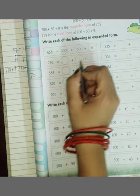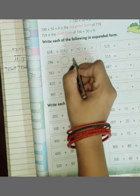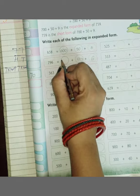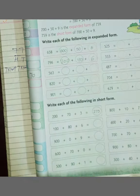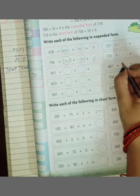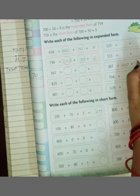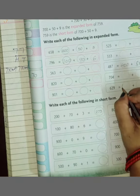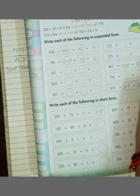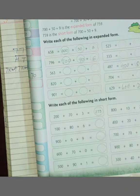Let's see 796. 796, 6 will be at ones, 9 will be at tens, and 7 will be at 700. Okay, simple split. 487, 629, like this. If you didn't get it, do let me know.